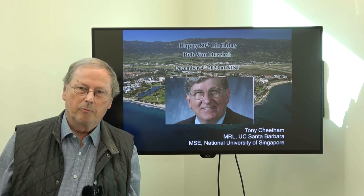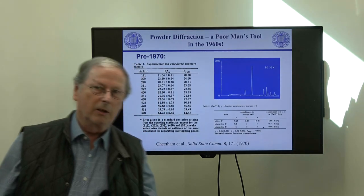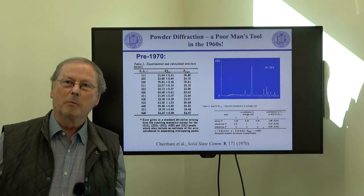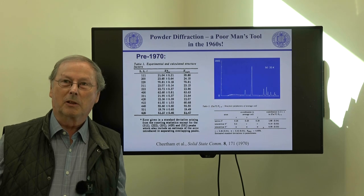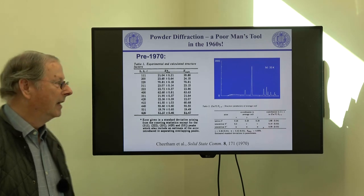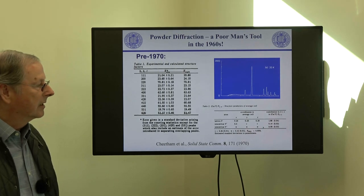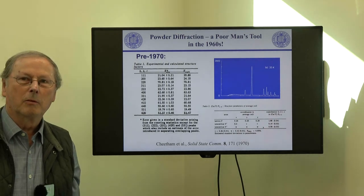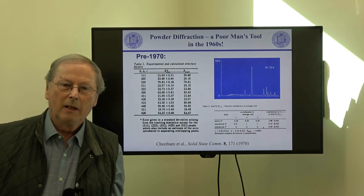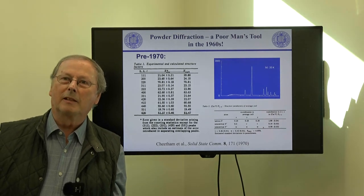At the time I had a background in powder diffraction from my PhD, and I'll show you here the kinds of things that we were doing. Before the Rietveld method came along, powder diffraction was a poor man's tool. You can see what I'd been doing in my PhD — taking integrated intensities from a powder pattern. This is a neutron powder pattern of calcium fluoride doped with YF3, and then analysing the integrated intensities. And then in 1969, Rietveld published his seminal paper.